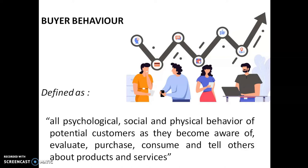When a buyer thinks about buying a product, he always thinks about evaluating — thinking two or three times whether it is needed and whether it is good quality, or trying to evaluate the product by asking the public. Even after buying the product, buyers will communicate about the product's quality and details to others. This is the most common buyer behavior which is actually seen.